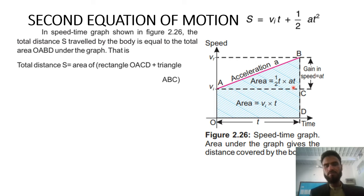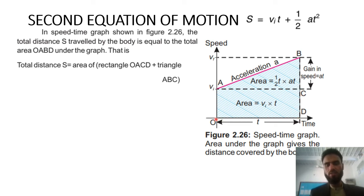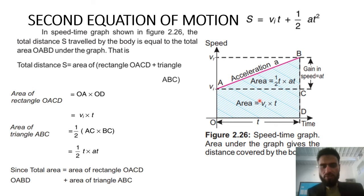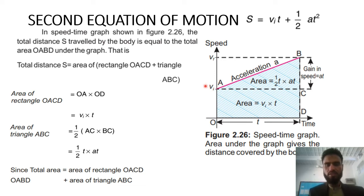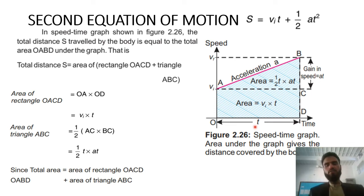To find the area of the rectangle, we multiply OA by OD. OA represents the Initial Velocity Vi, and OD represents the Time T. So multiplying Vi by T gives us the area of the rectangle.